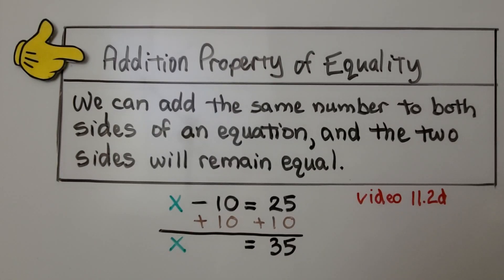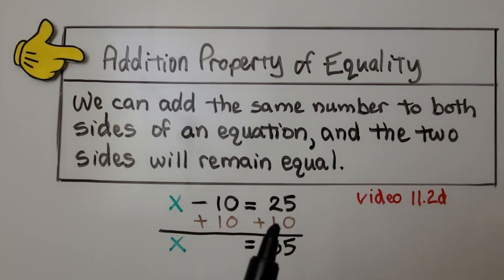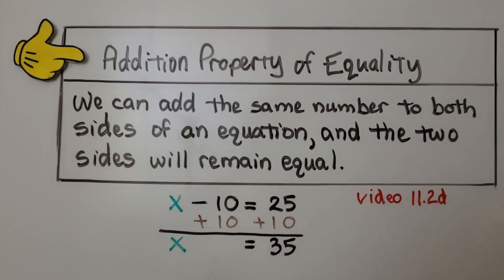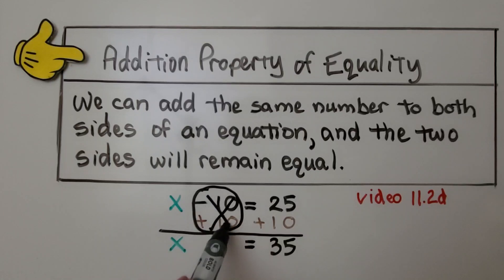The addition property of equality states we can add the same number to both sides of an equation and the two sides will remain equal. Here we have x minus 10 equals 25. We can add 10 to both sides of the equation because that's subtraction — we do the opposite. We add, and that is going to create a zero pair and eliminate this minus 10. We add 10 to this side, get 35, and we see x is equal to 35.